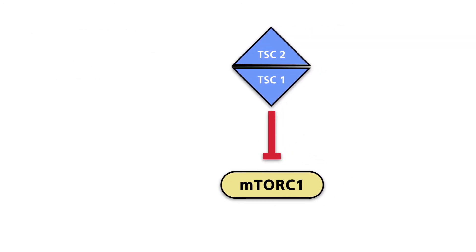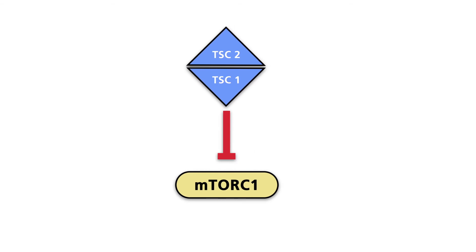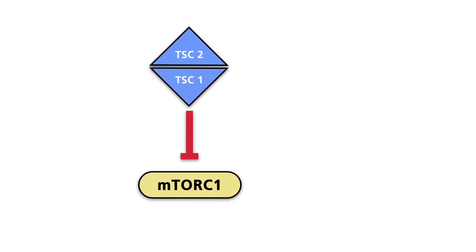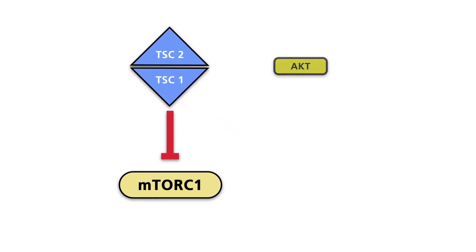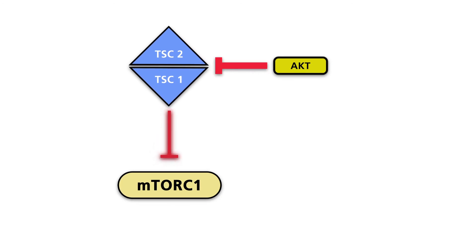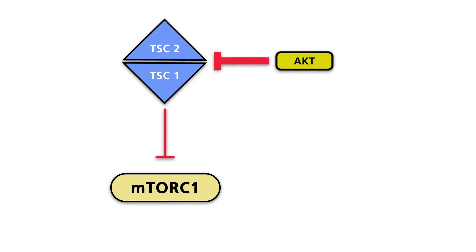The TSC1-TSC2-GTPase is inhibited by the oncoprotein AKT. The PI3-kinase AKT pathway is one of the major pathways activated in human cancer.